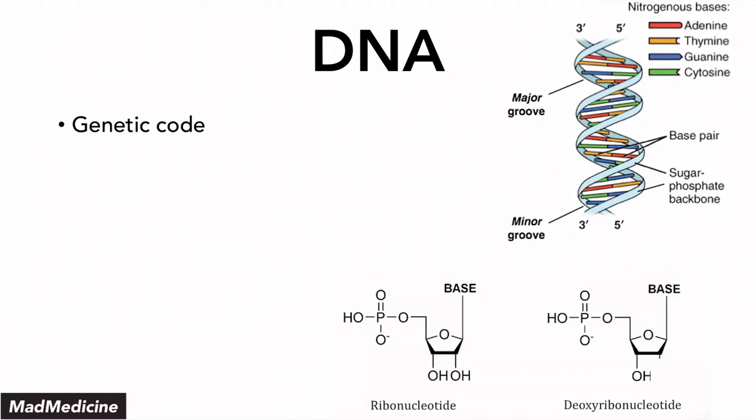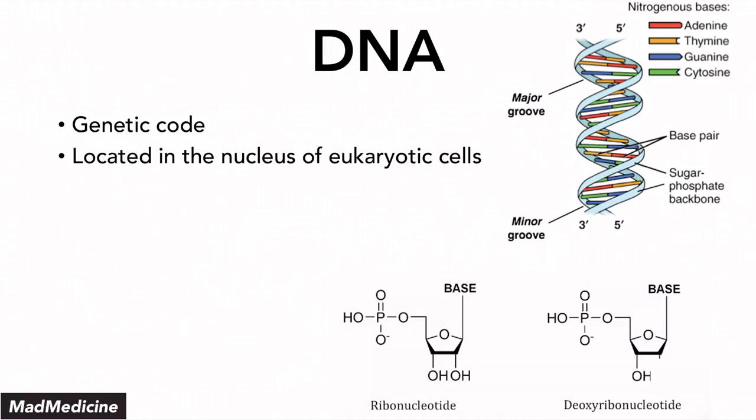DNA is essentially our genetic code — that's where our genes are encoded and where all of our information for our cells is contained. It's located in the nucleus of eukaryotic cells. In prokaryotic cells, it's actually located in the cytoplasm, which becomes more relevant when discussing infectious diseases, bacterial infections, and viral infections. For eukaryotic cells like human cells, it's located in the nucleus and it contains a polymer of nucleotides.